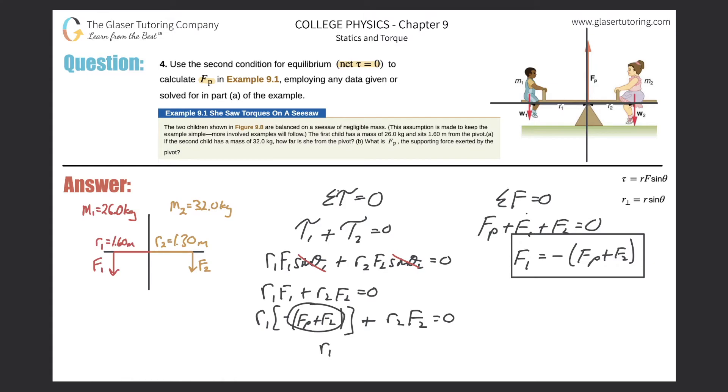So there's going to be negative R sub one multiplied by F sub P plus F two will all equal now negative R sub two F sub two.